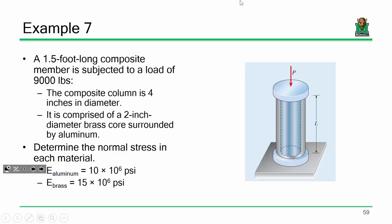This is a problem that deals with an internally indeterminate structure. We have a single member, so we can easily find external reactions — that wasn't the problem. The problem is that that one member has two unknown forces: the force in the aluminum and the brass. So we recognized that we needed an equation of compatibility. If we push down on this column, however much the aluminum contracts, the brass will undergo the same displacement. That was our second equation.